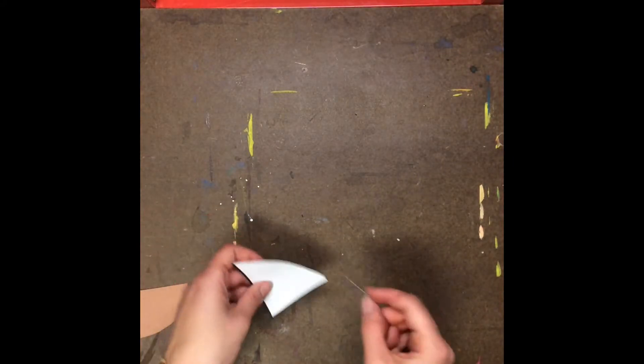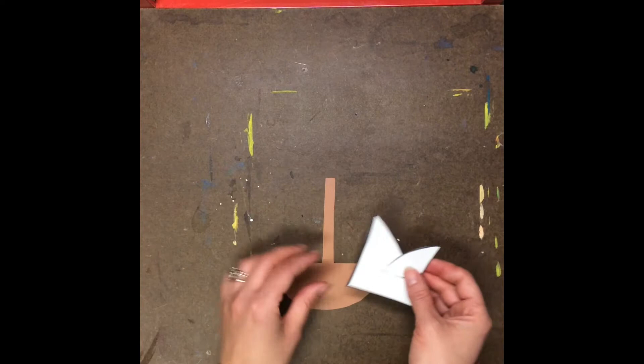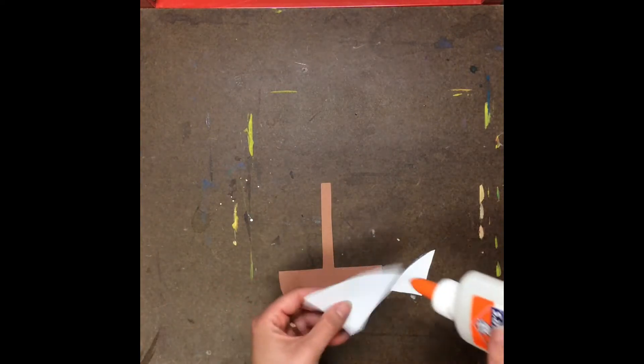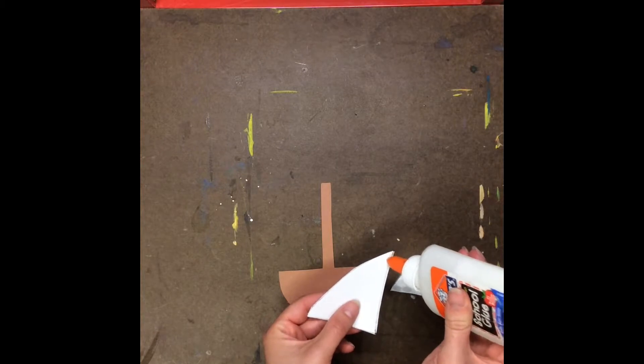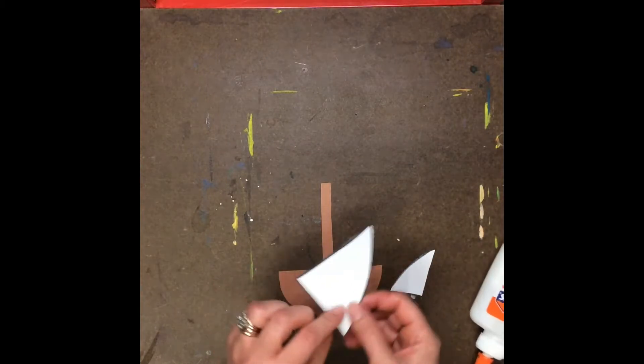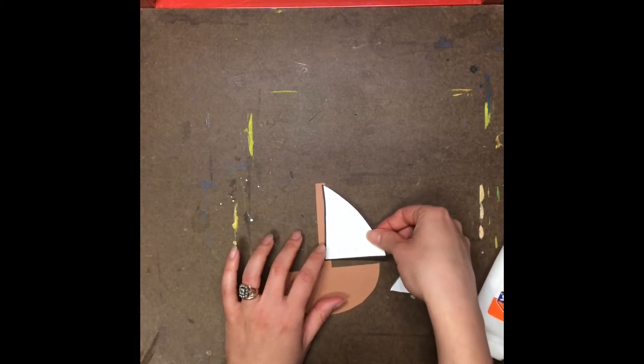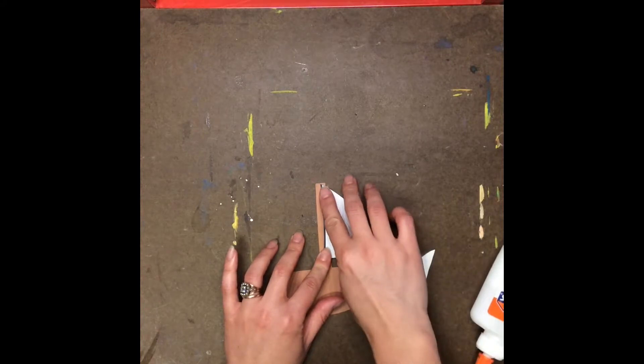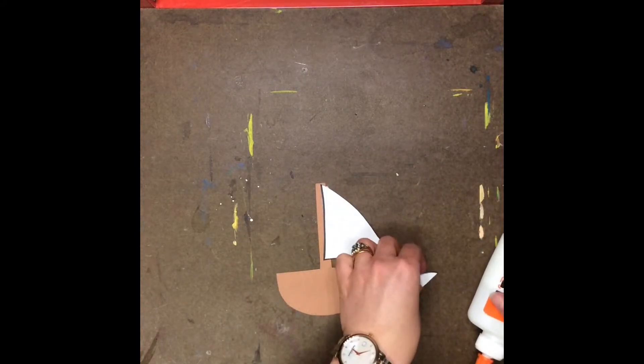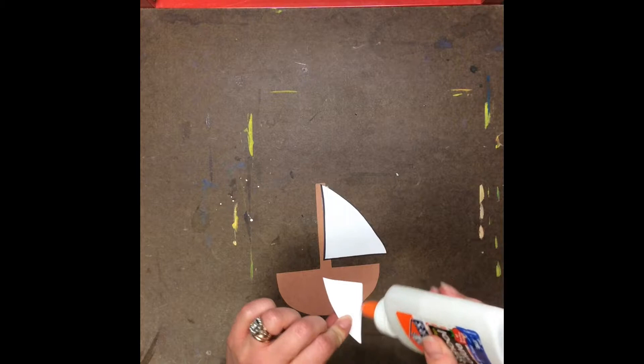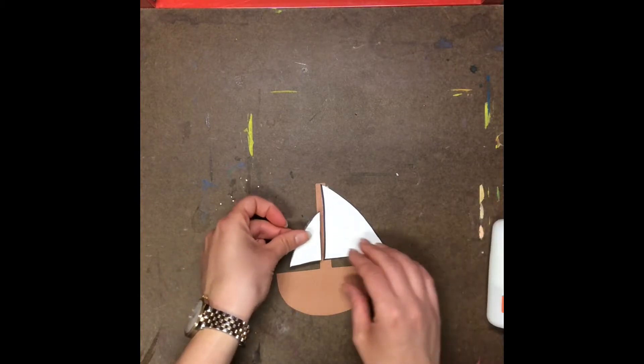The only thing that's important is that you have one that's large, one that's medium, and one that's small. Now that I have all of my pieces cut out I'm going to add just a tiny dot of glue to the edge of my triangle so that I can glue it to the boat. Just like this.